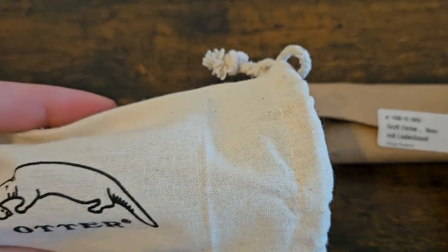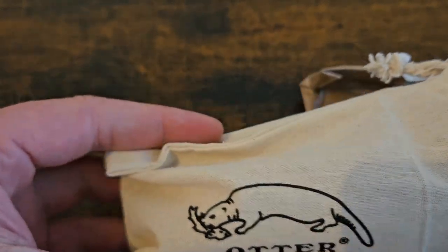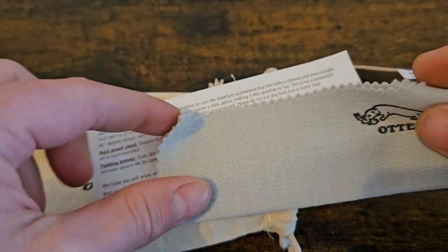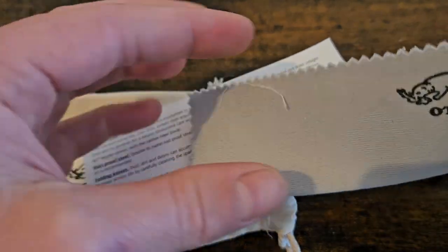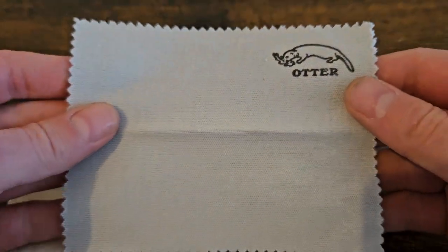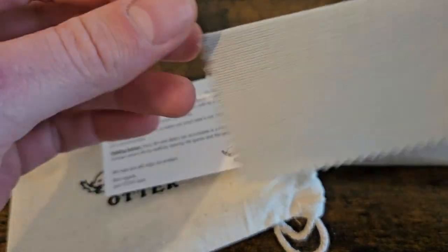It's a nice bag it comes in. See, I've got one of these. You usually get these with Otter. Sometimes with Otter as well, they give you a little sachet of oil. An Italian oil, I think. Nice little microfiber cloth.